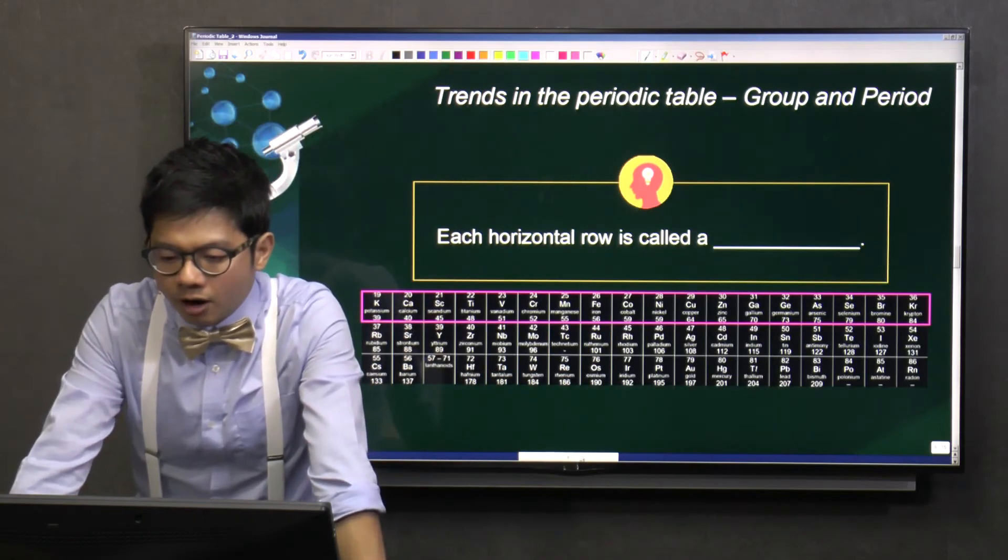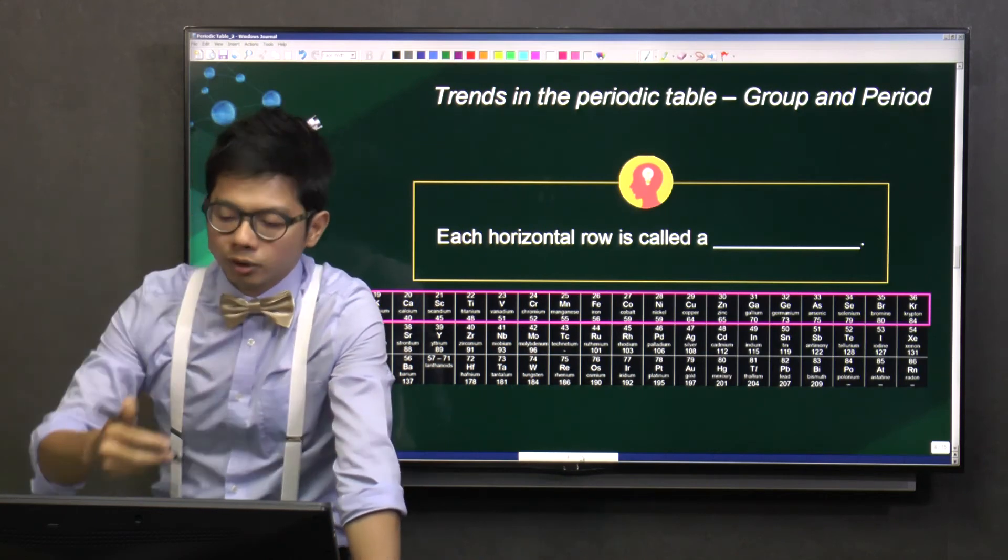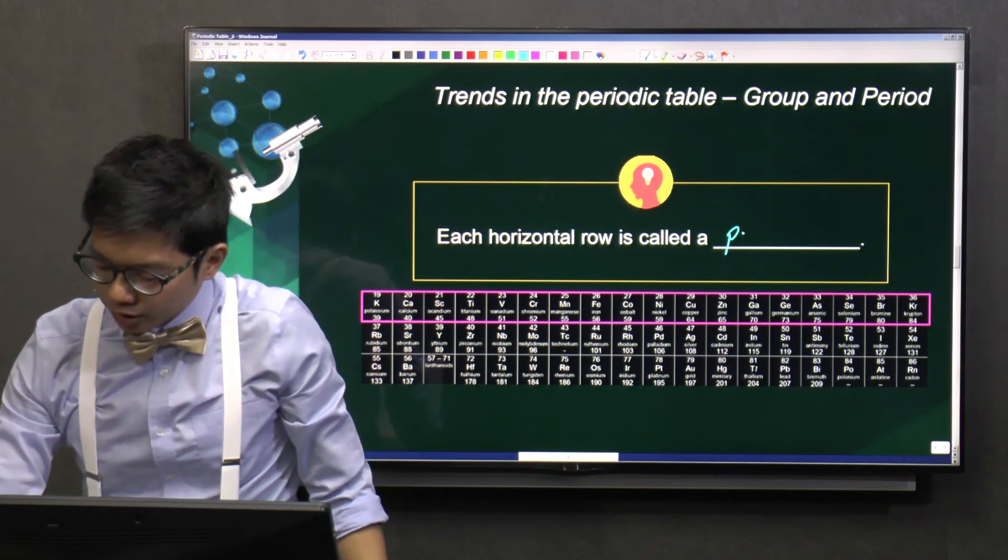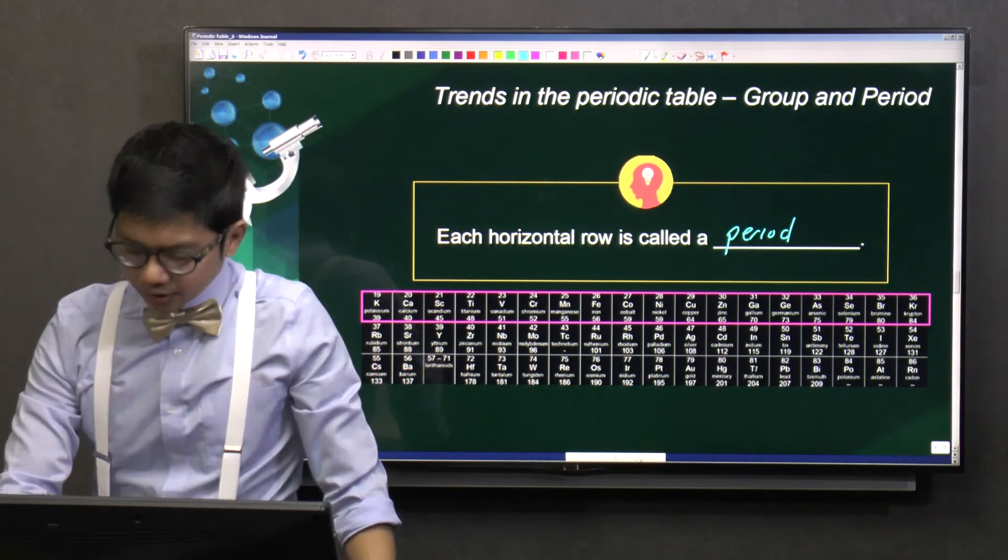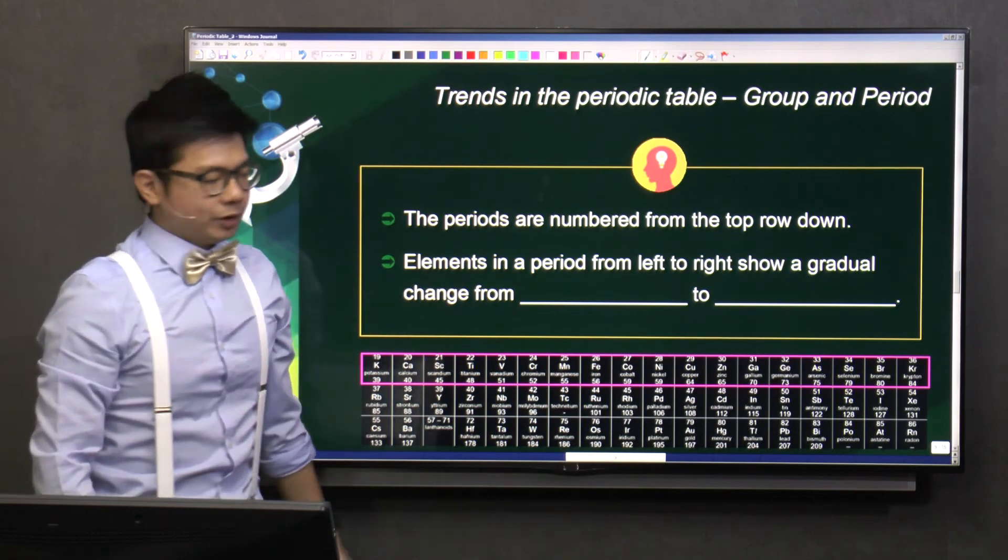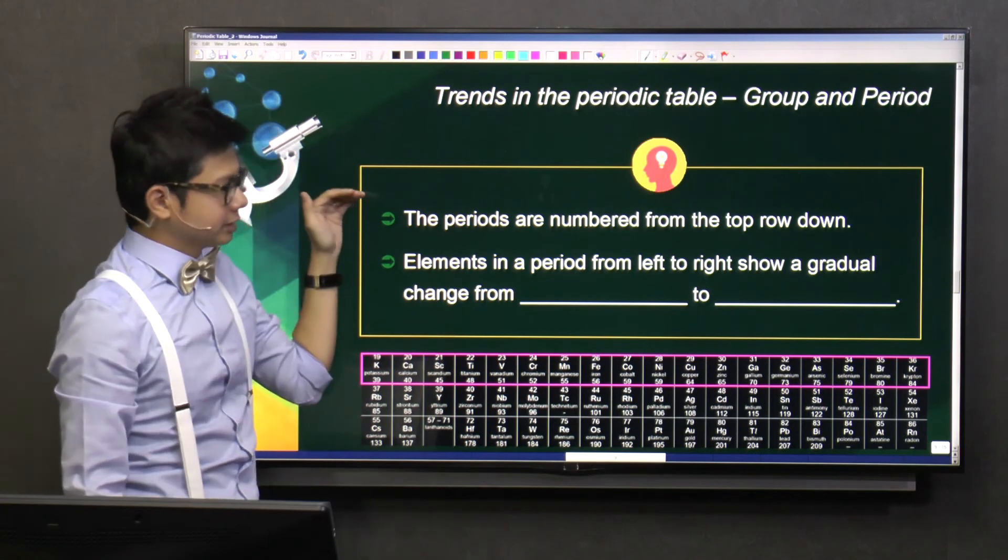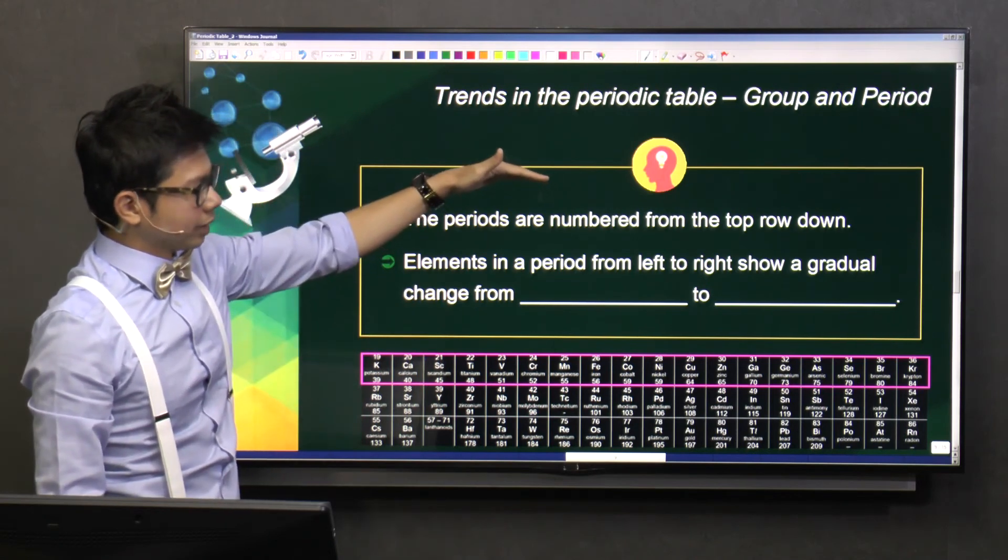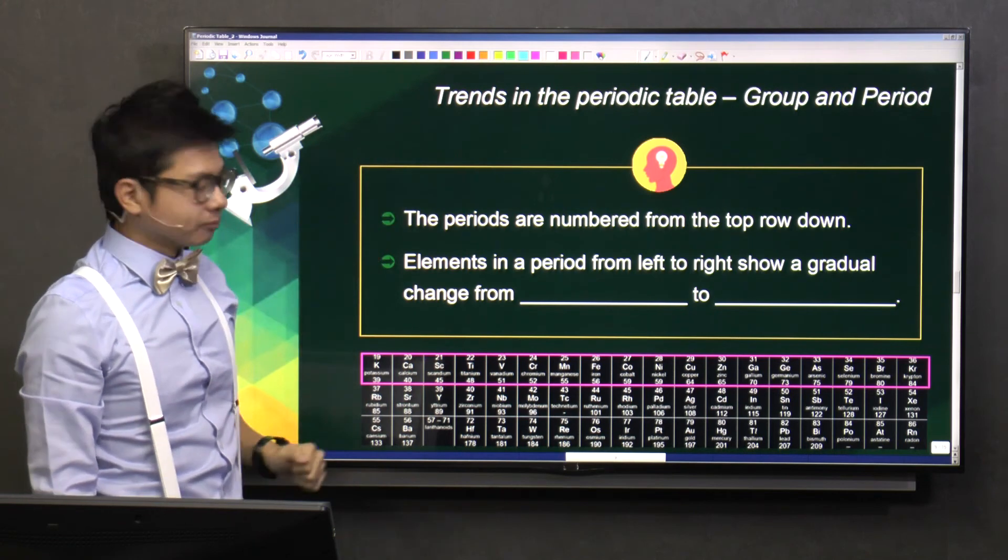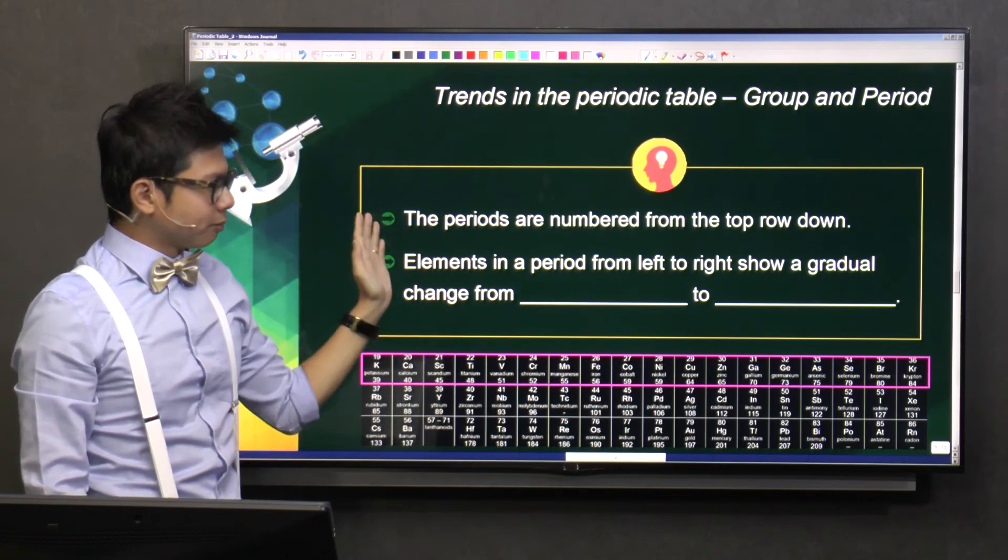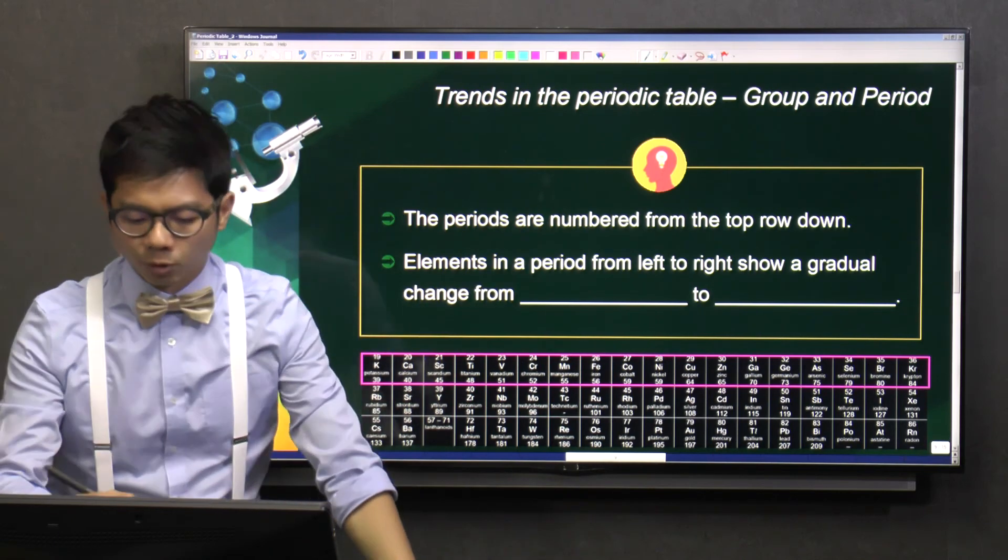We know that vertical column is called a group. So horizontal row in a periodic table is called a period. So the periods, they are numbered from the top down. So the first row, of course, it will be period 1. Then the second row, period 2, and so on. And as you go from the left to the right of the period, it shows you some trend. And trend number 1.